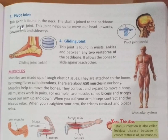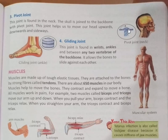The pivot joint is found in the neck. The skull is joined to the backbone. This joint helps us to move our head upwards, downwards, and sideways.